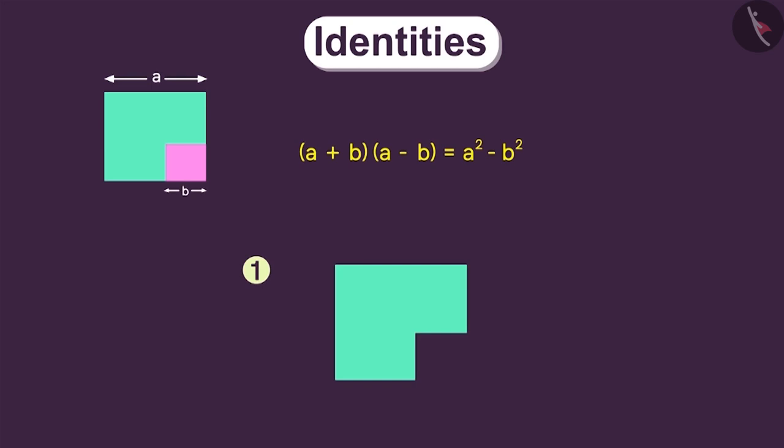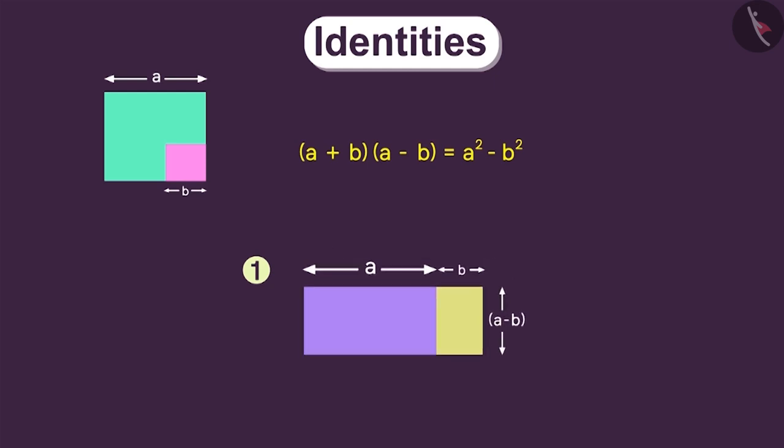We can see that this remaining area can be divided into two rectangles. The length of the first rectangle is equal to a and its breadth will be equal to a minus b. Now, let us consider this second rectangle. We can see that the breadth of this rectangle is b and its length is equal to a minus b. But if we observe, the breadth of this rectangle is equal to the length of this rectangle, we can move this rectangle from here and fit it over here. By doing this, we get one big rectangle.